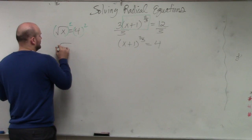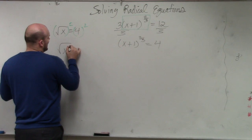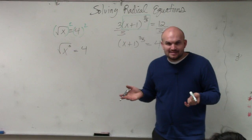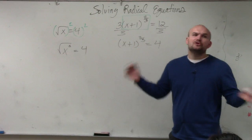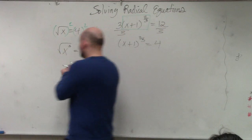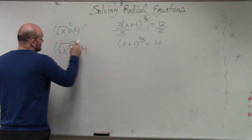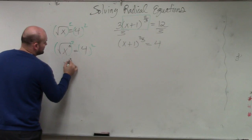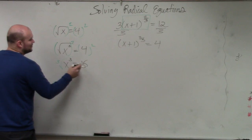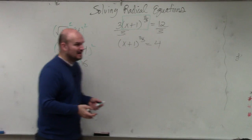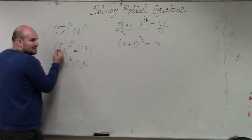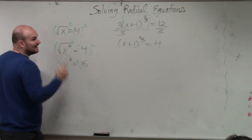But what if I had the fourth root of x to the third power? Well, now you're going to square both sides. But once you square both sides, then you have x to the third power equals 16. Then you have to take the cube root of both sides. To undo the square root first, then you undo the cube root.